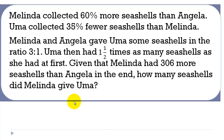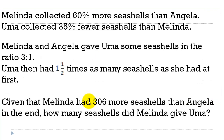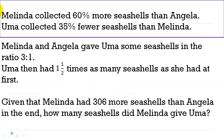When you read the whole question, it looks a bit complicated. But we can divide this question into multiple parts. The first part: Melinda collected 60% more seashells than Angela, and Uma collected 35% fewer seashells than Melinda. That's one part of the question, which is related to the comparison.